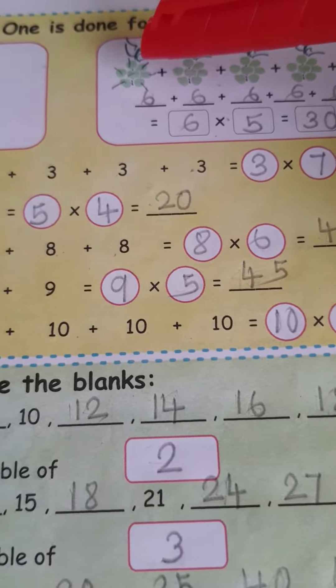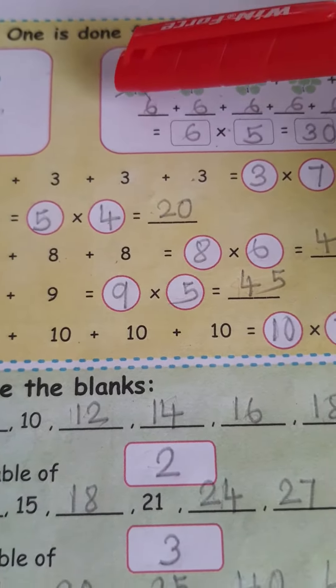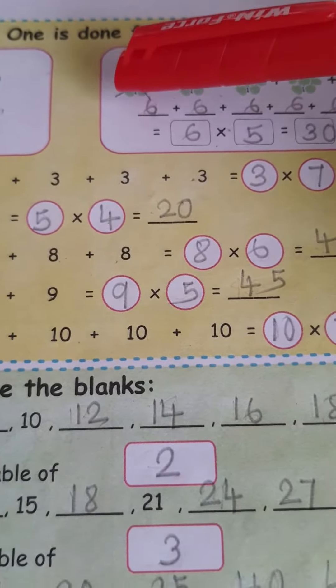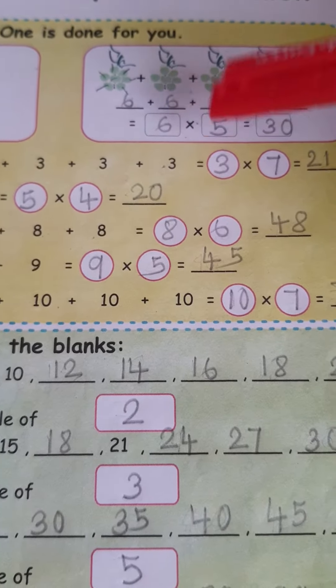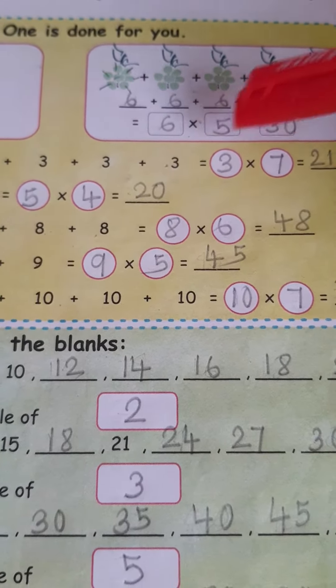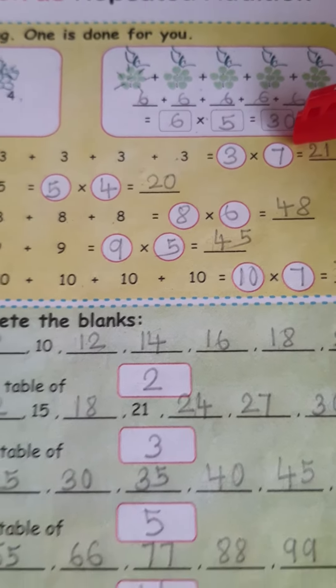Like this, come to here. How many flowers? 1, 2, 3, 4, 5, 6. So, first write 6, 6, 6, 6, 6. So, how many times 6? 5 times. So, 6, 5 is a 30. Like this.